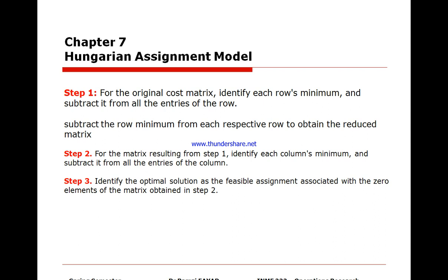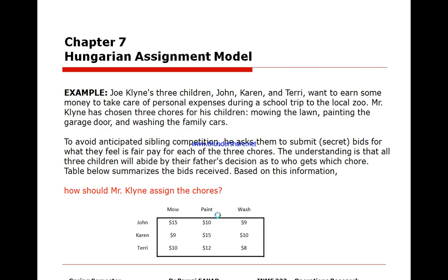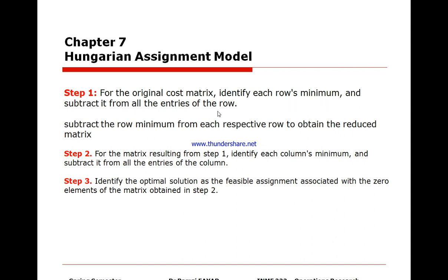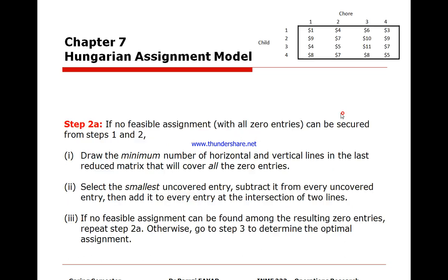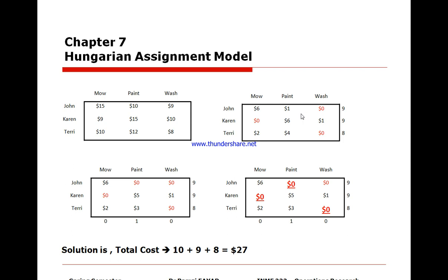The table below summarizes the information. We start with the original cost matrix. We identify each row minimum and subtract it from every entry in that row. The minimum value in the first row is 9, the second row is also 9, and the third row is 8. So: 15−9=6, 10−9=1, 9−9=0, 9−9=0, 15−9=6, 10−9=1, 10−8=2, 12−8=4, and 8−8=0.